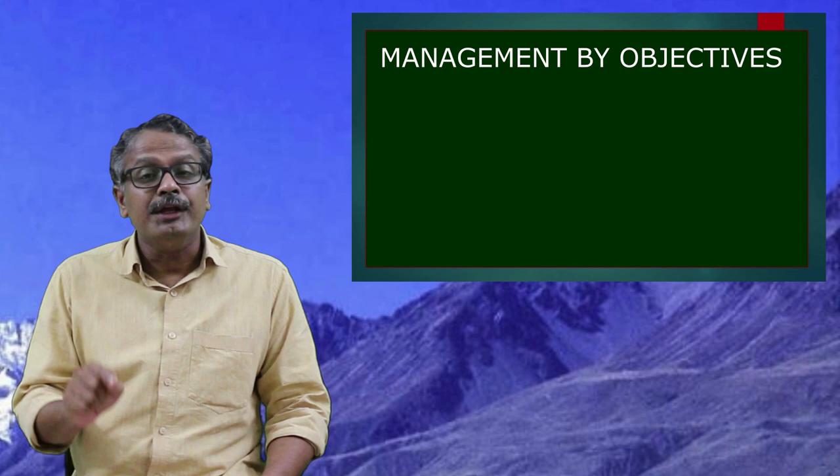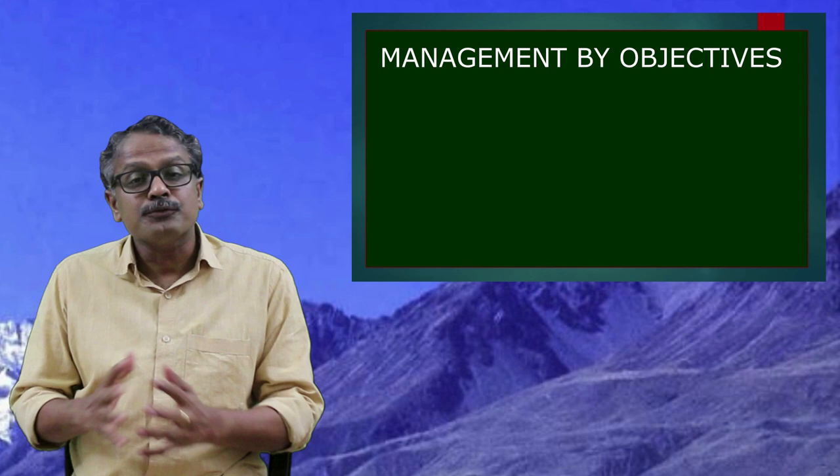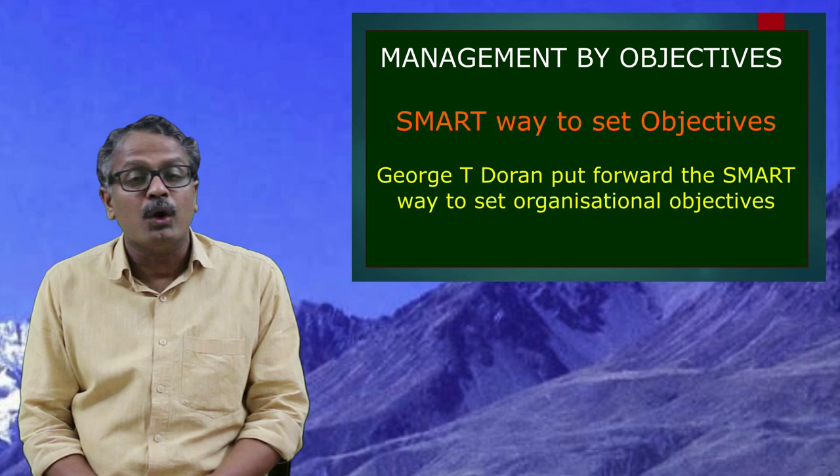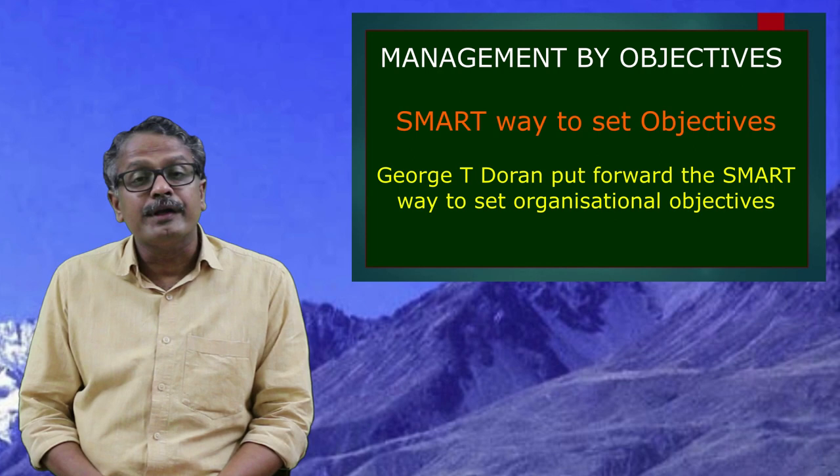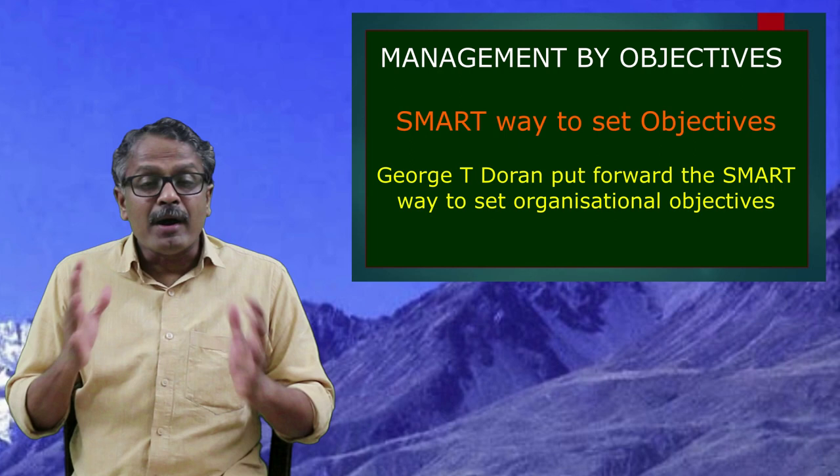In 1981, George T. Doran published a paper in the Management Review titled 'There is a SMART Way to Write Management's Goals and Objectives,' which discussed the importance of objectives and the difficulty of setting them. In that paper, Doran put forward the SMART way to set the objectives of the organization.